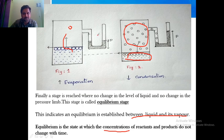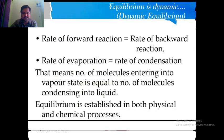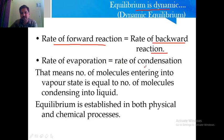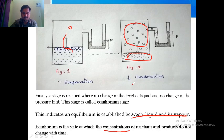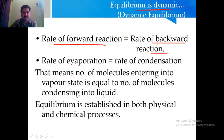In our example, evaporation is the forward process and condensation is the backward process. The rate of evaporation equals the rate of condensation — meaning the number of molecules entering the vapor state from liquid equals the number of vapor molecules condensing back to liquid. For example, if 10 molecules convert to vapor, the same number convert back to liquid. This type of equilibrium can be observed in both physical and chemical processes.